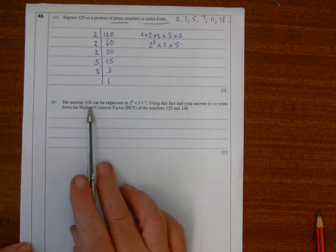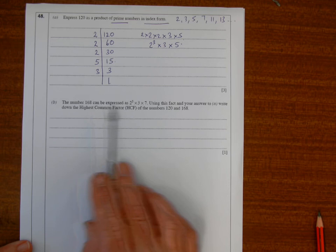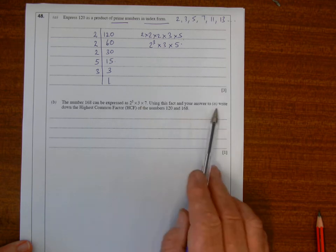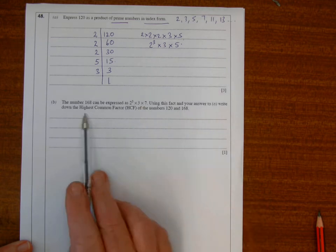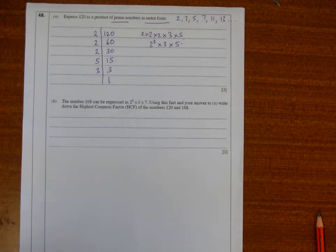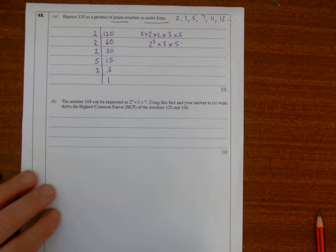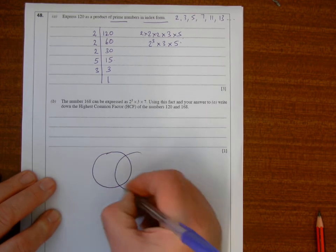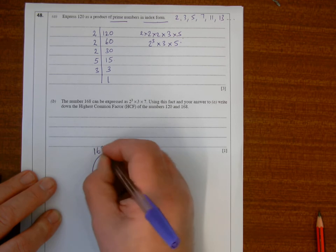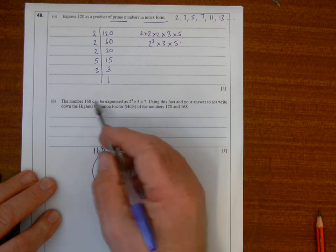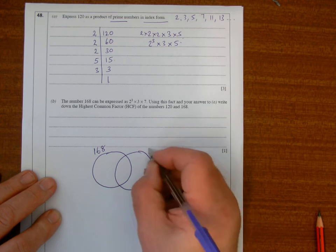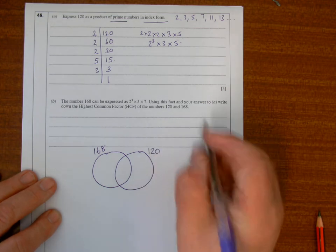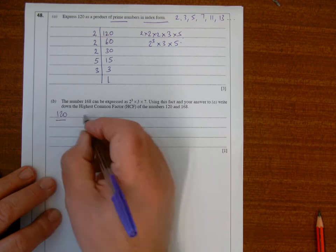Now the number 168 can be expressed as that. Using this fact in your answer to part a, write down the highest common factor of the numbers 120 and 168. We can do this by a Venn diagram method where I enter the factors for 168 and the factors for 120.